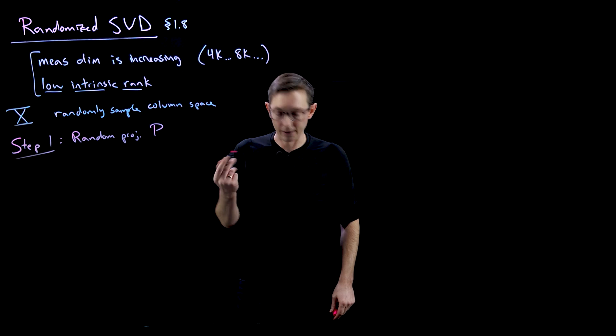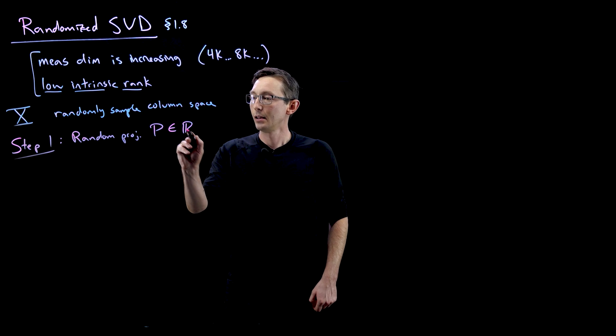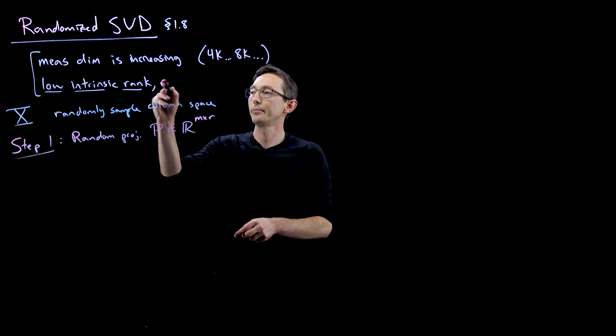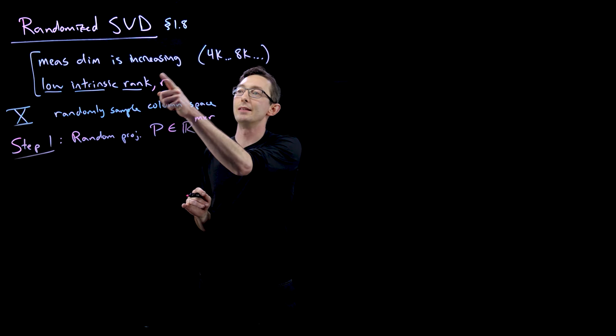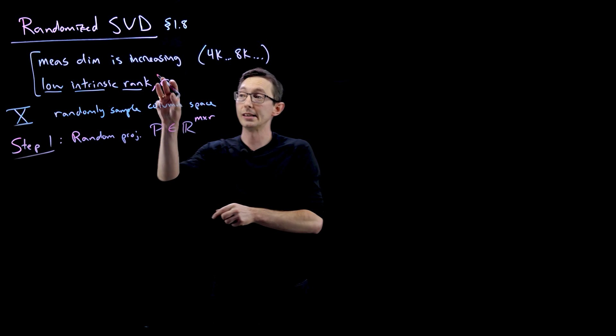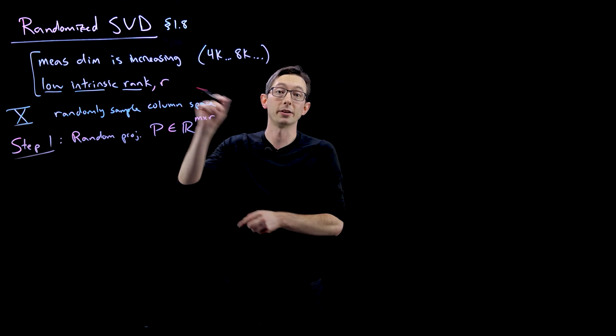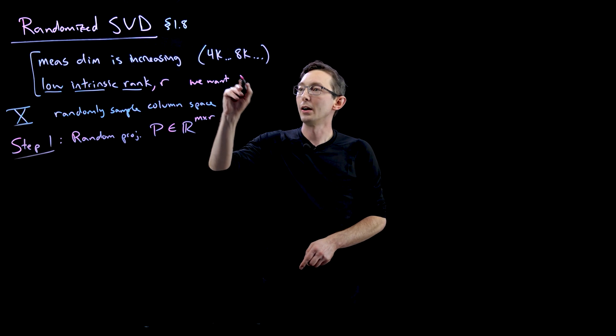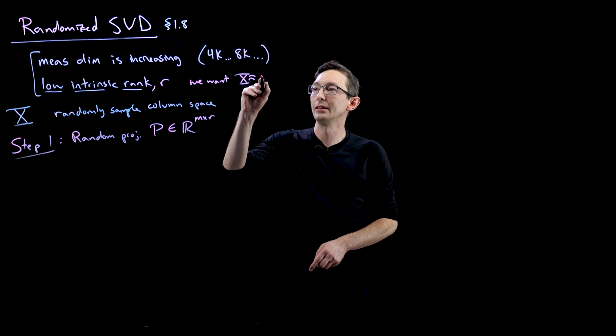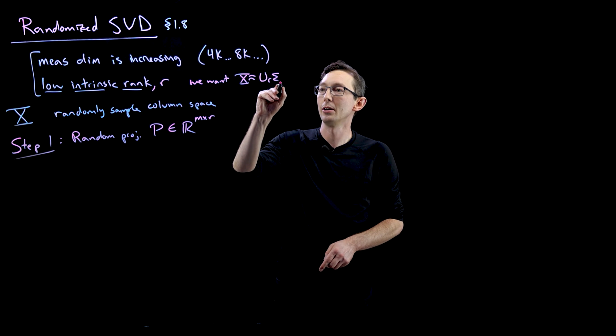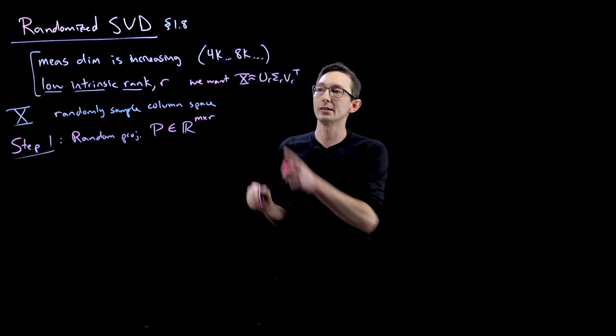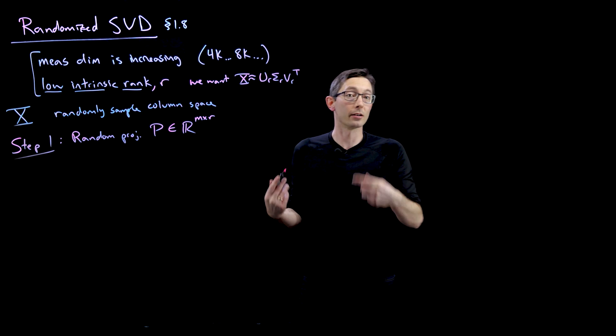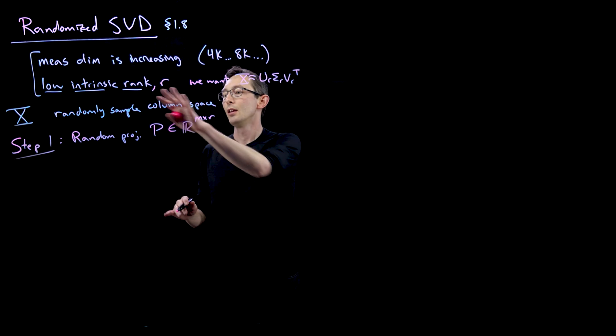So we're going to multiply P is a matrix that is going to be M by R, where R is the target rank of our system. This is the number of columns of the singular value decomposition that we actually want to approximate. So we want X is approximately equal to U_R sigma_R V_R transpose, where these are the first R columns of U and V and the first R by R submatrix of sigma.